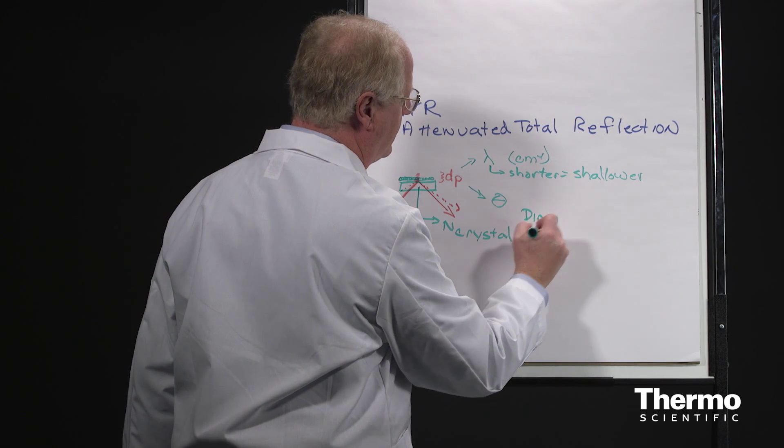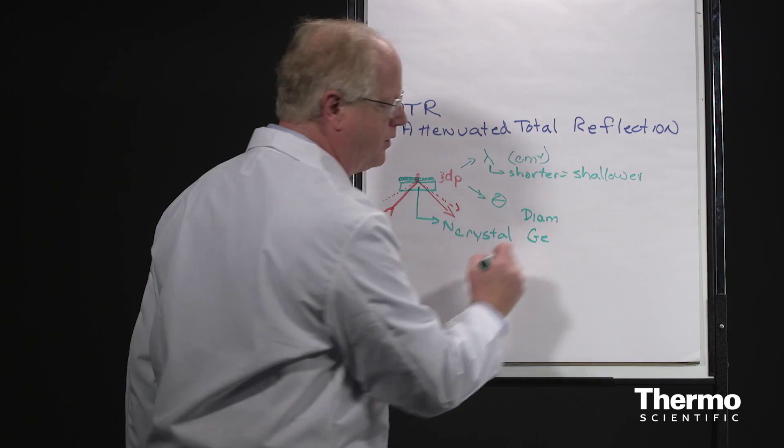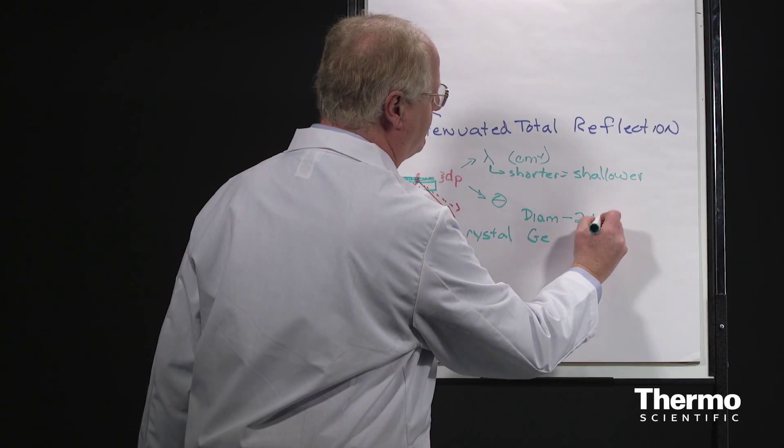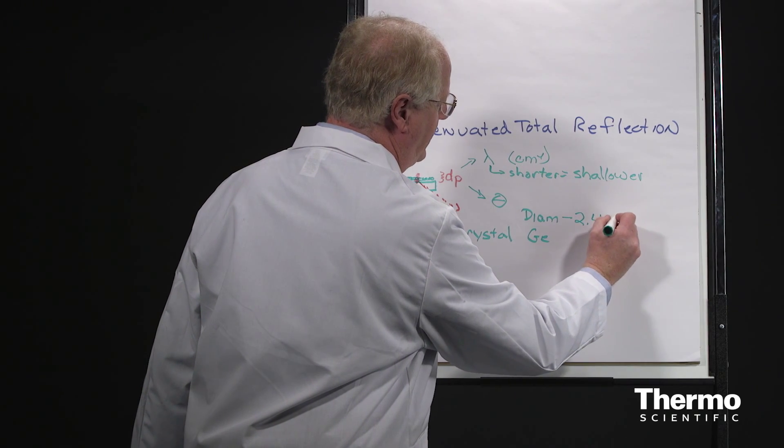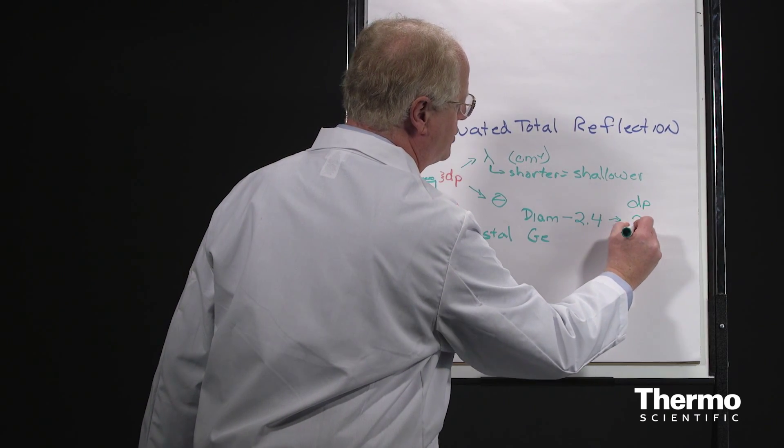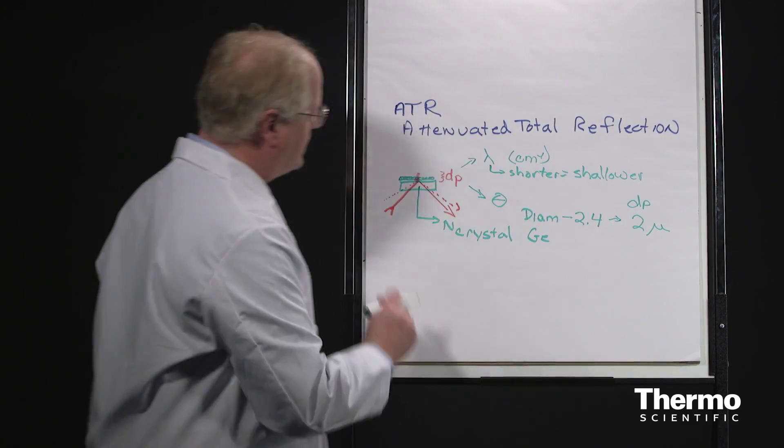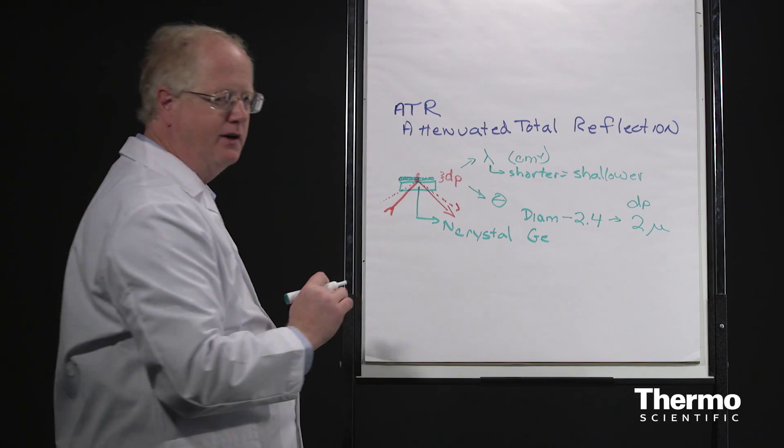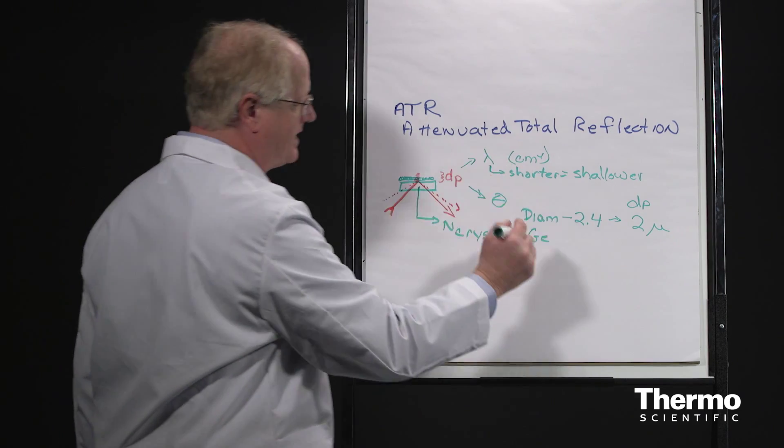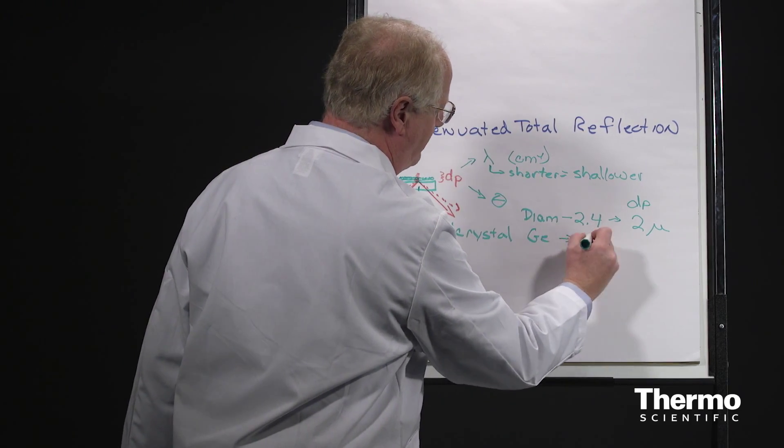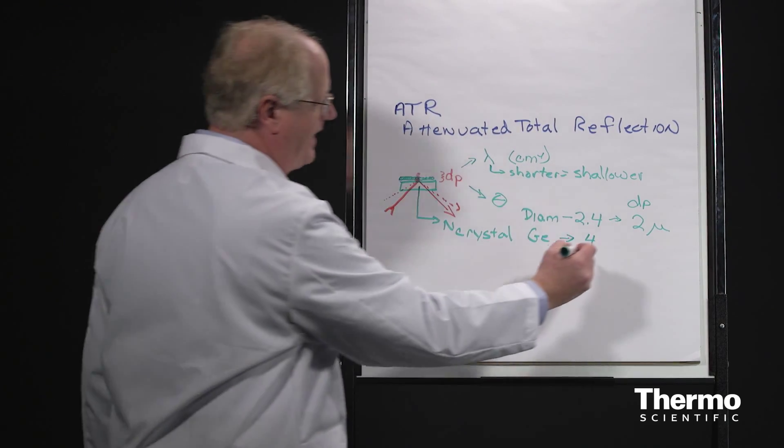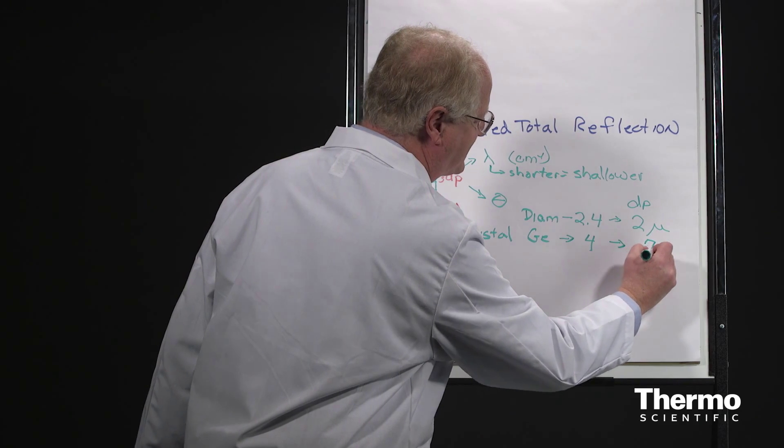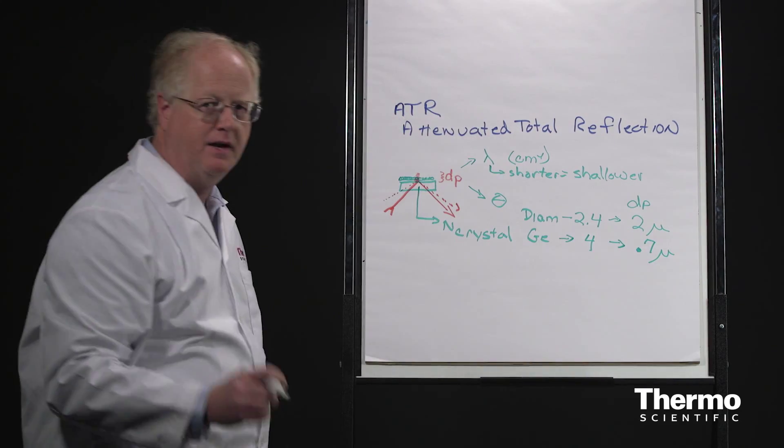If we just look at two such materials, diamond and germanium, two of the more common crystals that we work with, diamond has an index of about 2.4. This leads to a depth of penetration of about 2 microns. Germanium has an index of 4, much higher, and the depth of penetration is about 0.7 microns, much less.